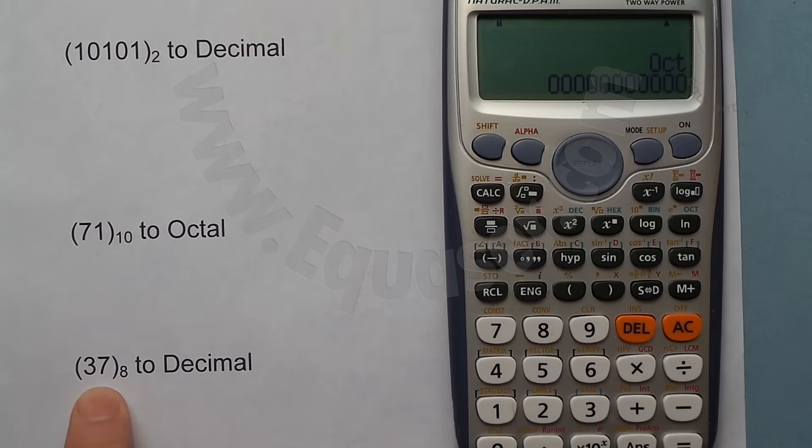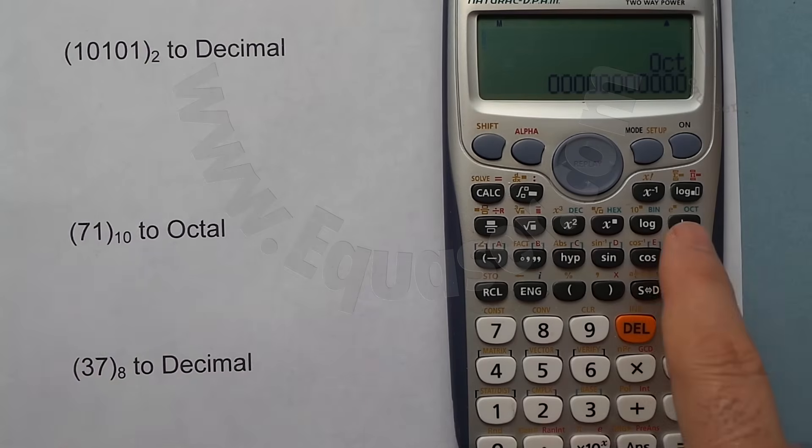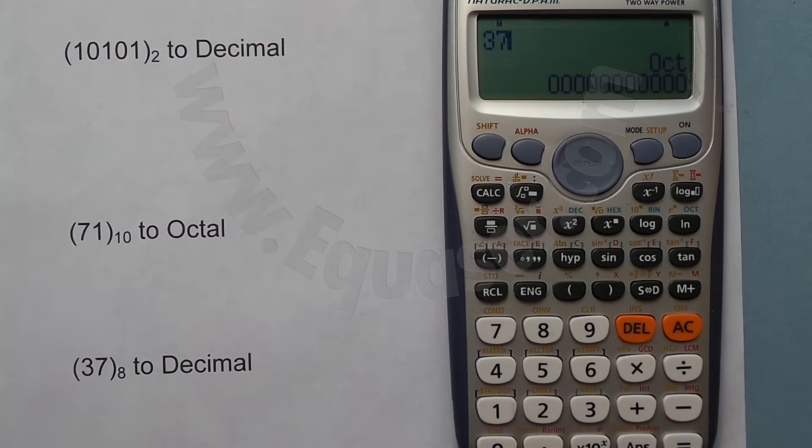Now let's convert an octal number to decimal. I have to be in octal, which I am. In octal, I enter 37. To convert it to decimal, press this, which is 31 in decimal.